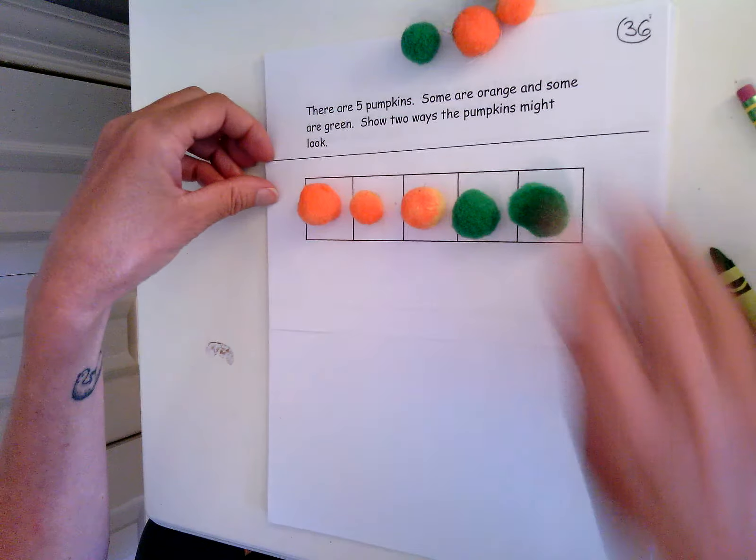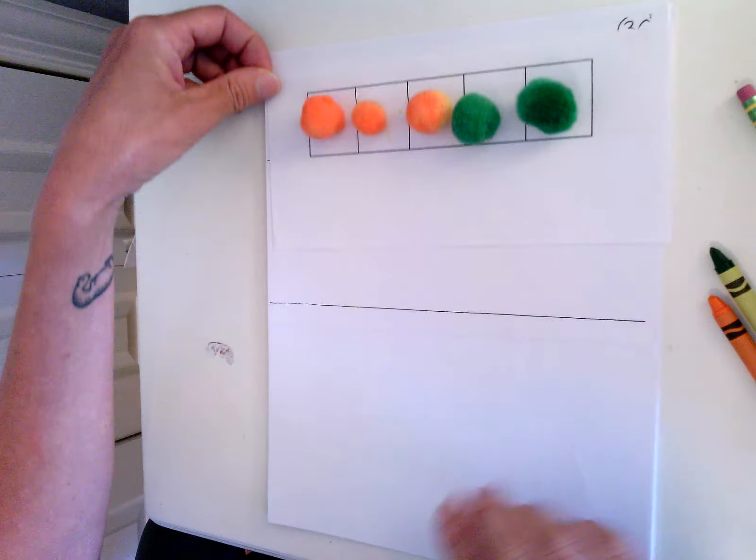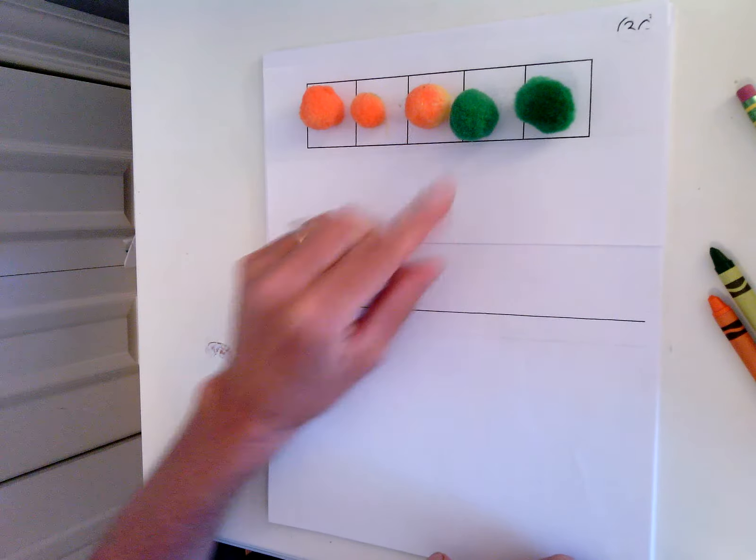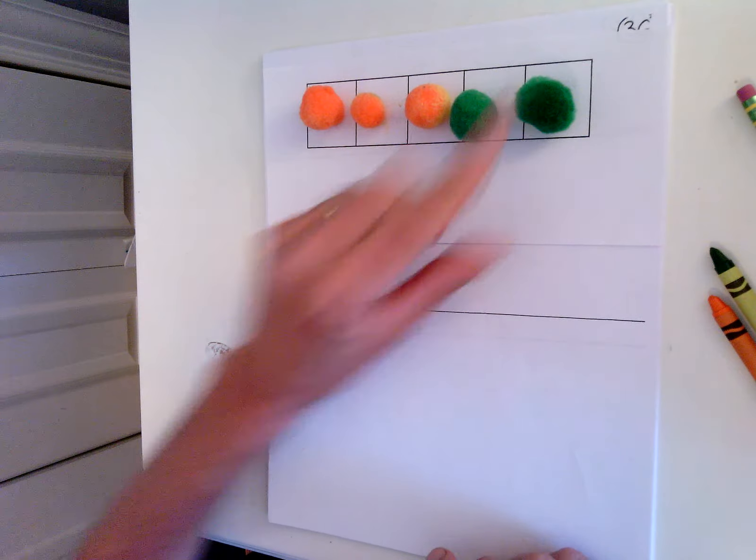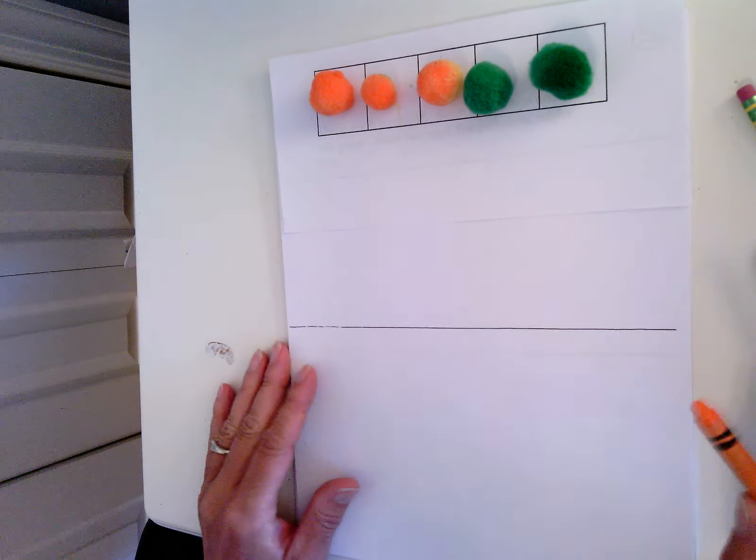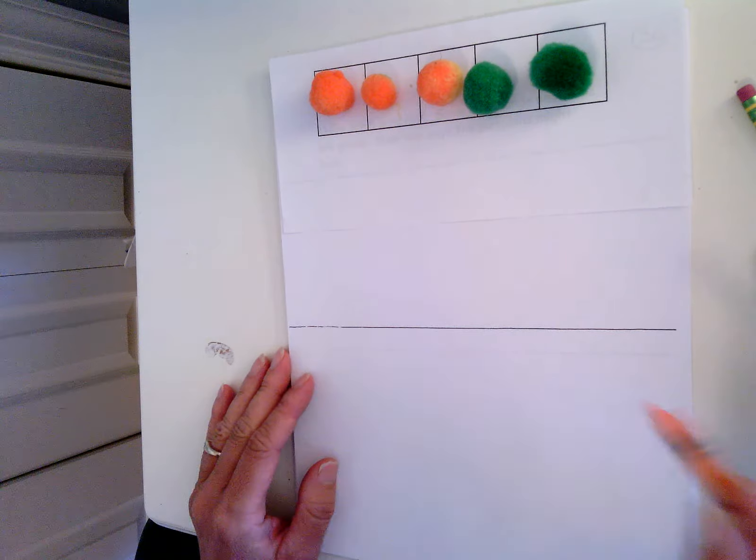So there's five pumpkins. How many are orange? One, two, three. And how many are green? One, two. So we're going to show our pumpkins with a number bond and with a picture.